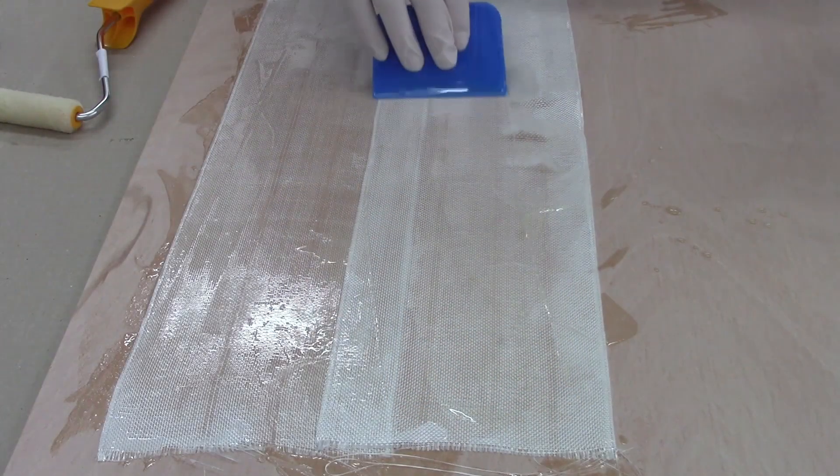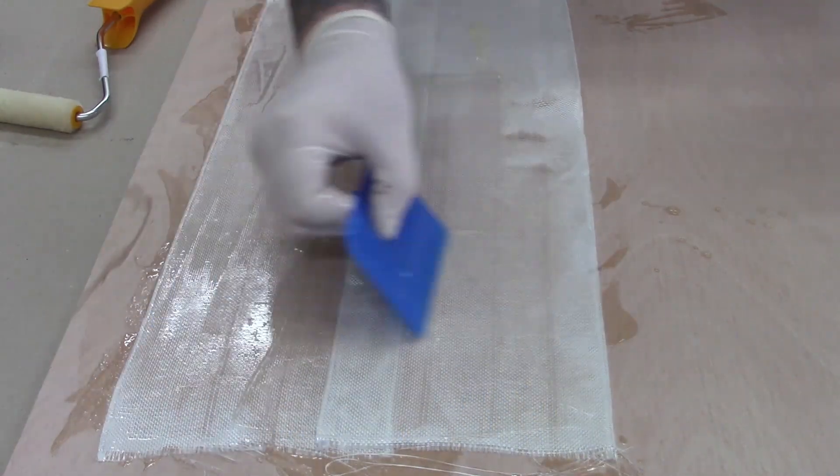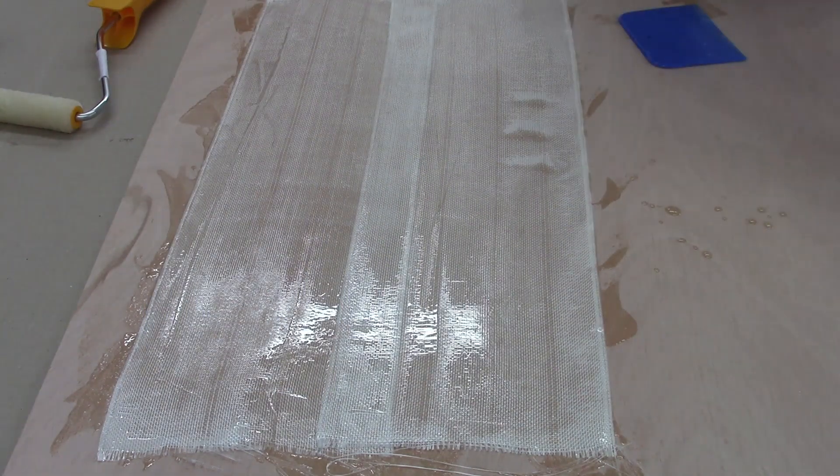Apply fiberglass to the surface with epoxy and a plastic squeegee, making sure you wet it out thoroughly. Then lay over your peel ply and smooth it out with the squeegee.